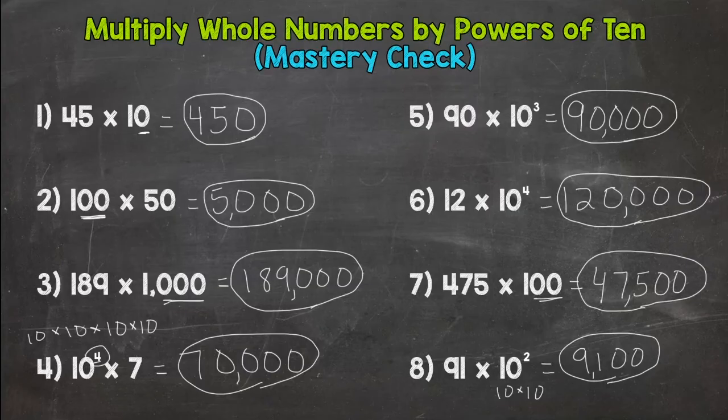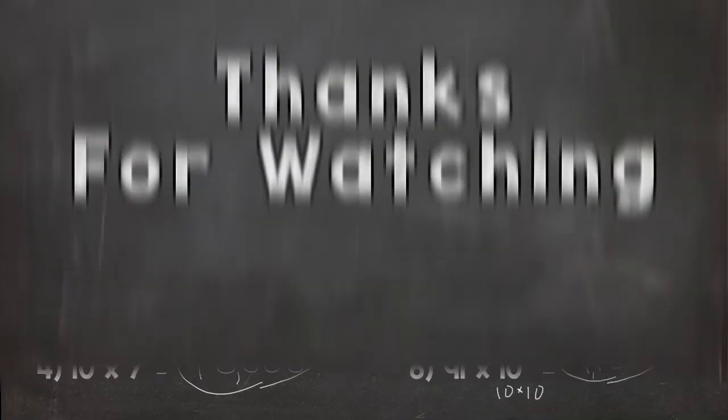If you hit your mastery mark there, six, seven, or eight correct, you are ready for multiplying decimals by powers of 10, which is a little different. You can't just use placeholder zeros. So I will see you over at multiplying decimals by powers of 10. I dropped the link below. So see you over there. Thanks for watching.